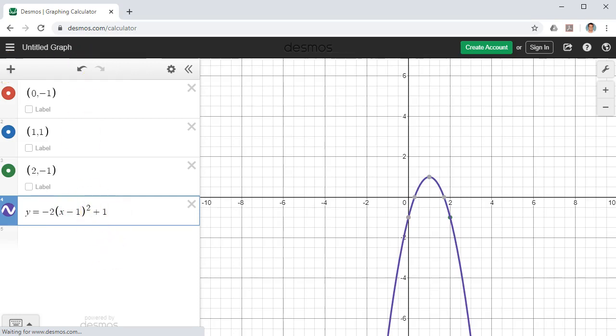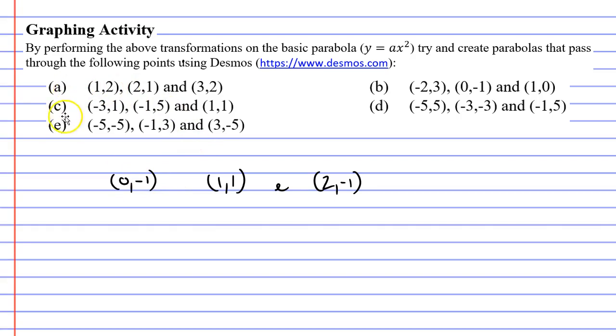So as you complete these questions, questions a through e, just write in the comment section below the answer which will be an equation that you put into Desmos that will draw the correct parabola. Anyway, that completes our video on the graphing activity. Remember to read the description below for links to work booklets that relate to this video, and also remember to read the comments below if you'd like the solutions to questions a through to e.